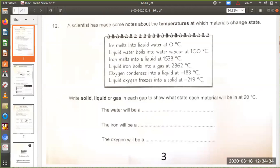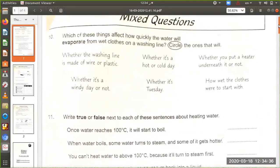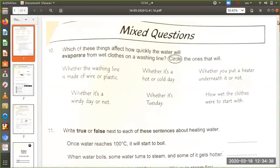The last page. Which of these things affect how quickly the water will evaporate from wet clothes on a washing line? Circle the ones that will be correct. The answer will be: whether it's a windy day or not, whether it's a hot or cold day, whether you put the heater underneath it or not, or how wet the clothes were to start with.